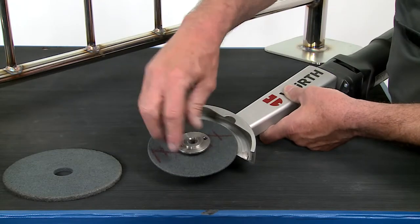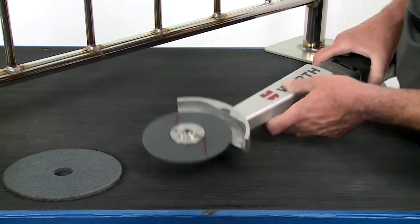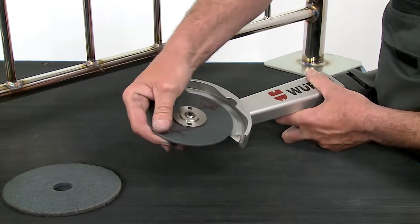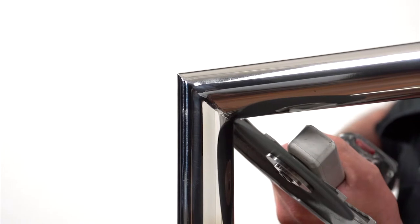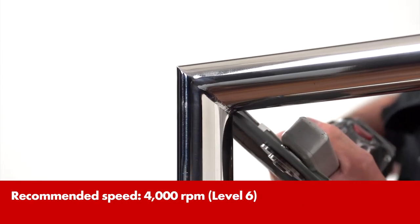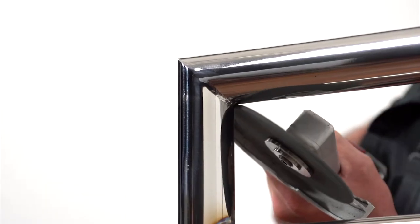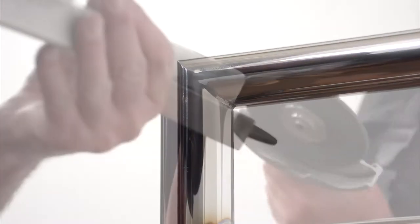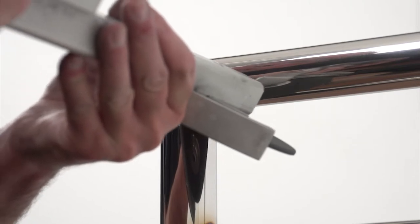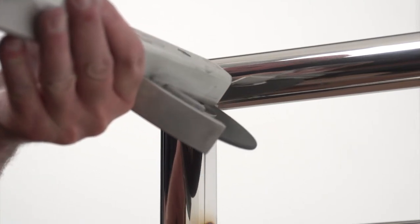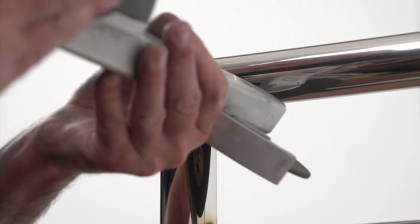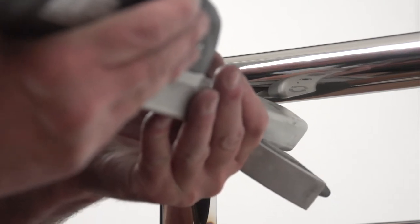If the weld seam needs to be removed completely, use the fillet weld sander again. Begin with the hard pressed fleece disc in hardness grade 7 in 3mm. Remove the weld seam with this. Make sure the disc is kept directly over the weld seam. In this way, you prevent the formation of any hollows which later cannot be polished out.